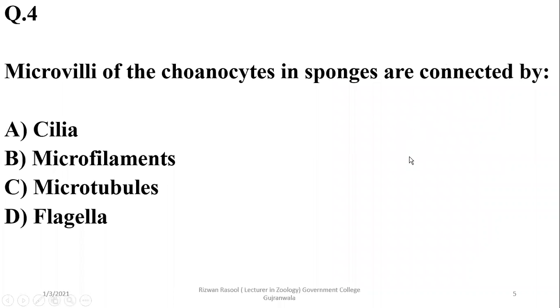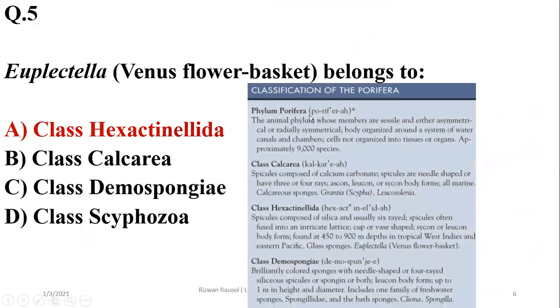Microvilli of the choanocytes in sponges are connected by microfilaments and they are the characteristic feature of collar cells or choanocytes. Euplectella, Venus flower basket, belongs to class Hexactinellida, which is found at 450 to 900 meter depth. Euplectella is the common representative member of this class.